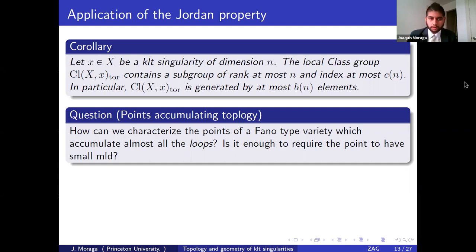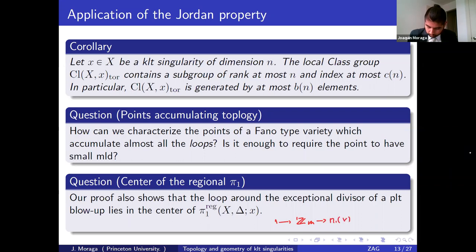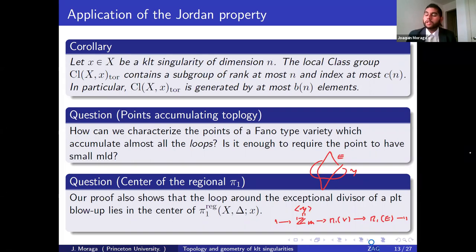Another question: what about the center of this π₁? From our proof it follows that the loop around the exceptional divisor — the generator of Z_M in the exact sequence — lies in the center. A question I am asking myself: do all possible PLT blowups and all loops around the exceptions generate the center? I think if this is true, it would be a really interesting result.